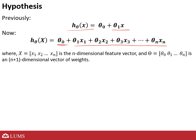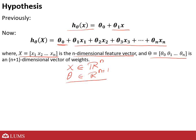We can use matrix multiplication and operations to represent all the work in linear regression. This whole thing — theta naught plus theta_1 x_1 plus theta_2 x_2 — can be written using vectors and matrices. Here, x is your feature vector going from your first feature x_1 to x_n, an n-dimensional feature vector. And theta is your n+1 dimensional vector of weights, where x belongs to R^n and theta belongs to R^(n+1).